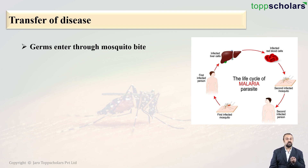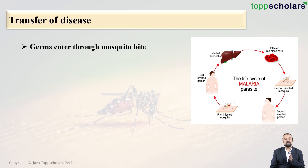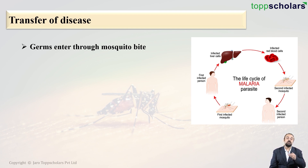The pathogen responsible for malaria is called Plasmodium. In the infected person, Plasmodium moves to the liver cells, and from the liver cells it goes to the blood cells. If another mosquito bites this infected person, that second mosquito also becomes infected, and when it bites another healthy person, the disease is transferred.